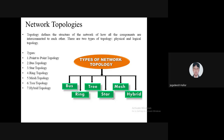Topology is nothing but a design of a network or a structure of a network. It combines all the components, and all the components are interconnected with each other — that is called a topology. The actual definition: topology is the design or structure of a network, describing how all the components of the network are going to interconnect with each other.